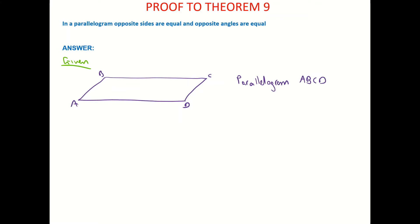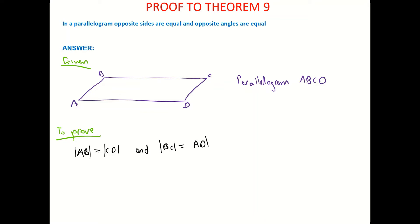And what we want to prove is: we're trying to prove that the length AB is equal to the length of CD, and we're also trying to prove that the length from B to C is equal to the length of A to D. So that's the sides dealt with.